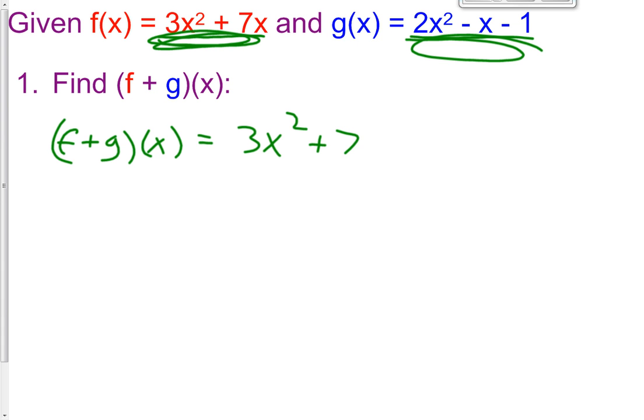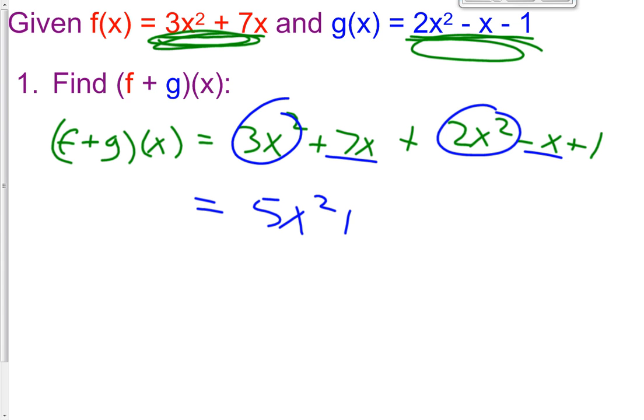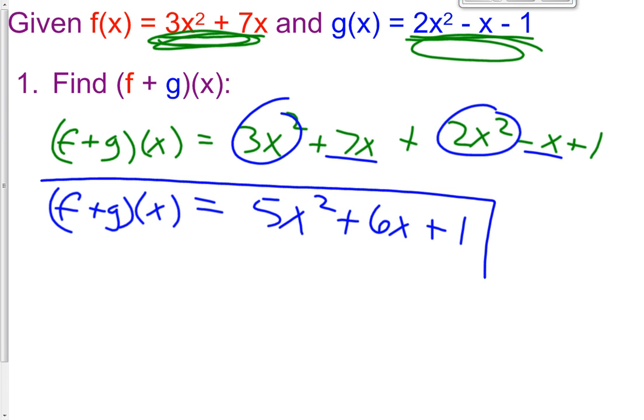3x squared plus 7x plus 2x squared minus an x plus 1. So now we're just adding them together. We're not solving anything, we're just combining like terms. So 3x squared plus 2x squared is 5x squared. 7x minus 1x is a positive 6x, and then we have our constant term of a positive 1. So that's what we have when we add f plus g of x. That's our answer.